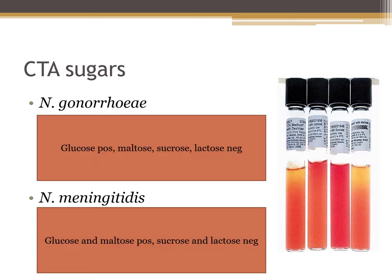When identifying Neisseria to species level using CTA sugars: Neisseria gonorrhoeae is glucose positive but negative for maltose, sucrose, and lactose — remember this because gonorrhoeae starts with G and glucose starts with G. Neisseria meningitidis is positive for glucose and maltose, negative for sucrose and lactose — remember this because meningitidis starts with M and maltose starts with M. These CTA sugars contain a 1% carbohydrate solution of either maltose, sucrose, lactose, or dextrose.